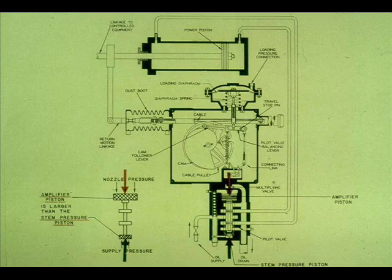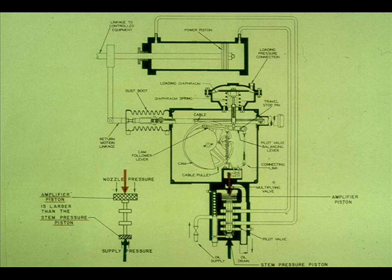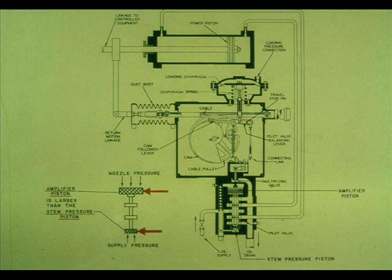Here you can see the two forces that act upon the pilot valve. The variable pressure is from the multiplying valve. The constant pressure is the supply pressure acting on the stem pressure piston. Notice that the amplifier piston area is larger than the stem pressure piston. This is why a small force on the amplifier piston can make the stem pressure piston lower.